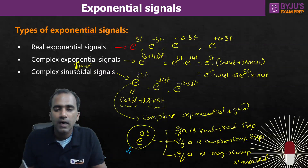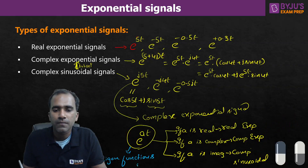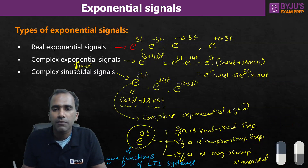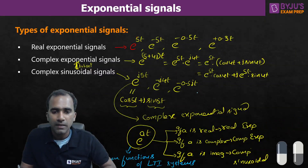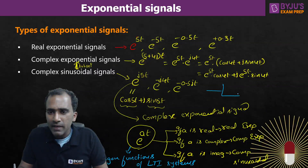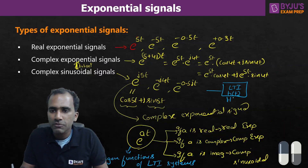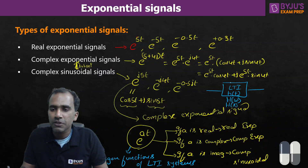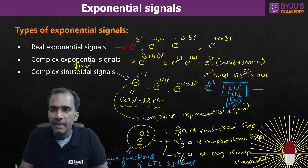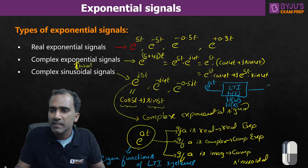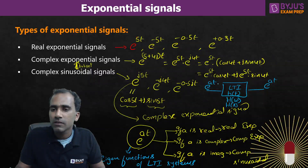Exponential signals can also be called eigenfunctions — they behave like eigenfunctions of LTI systems. For an LTI system with impulse response h(t), frequency response H(ω), and transfer function H(s): if you give e^(at) as input, the output will be the same as the input multiplied by some constant. For eigenfunctions, whatever input you give, the output is exactly the same except multiplied by a constant.